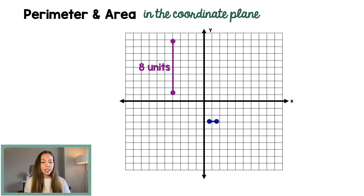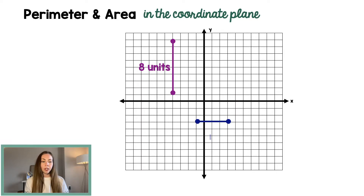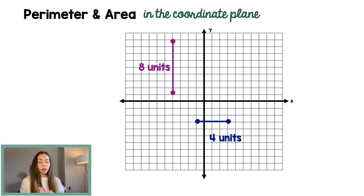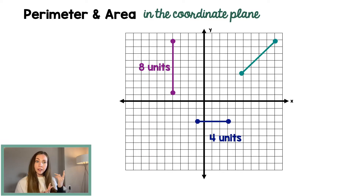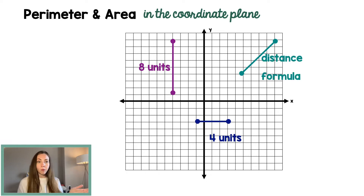Same thing if you had a horizontal line — you're going to count those: one, two, three, four units. That's it. So the distance formula is only meant to be used when you have a diagonal line, which is where you would apply the distance formula.